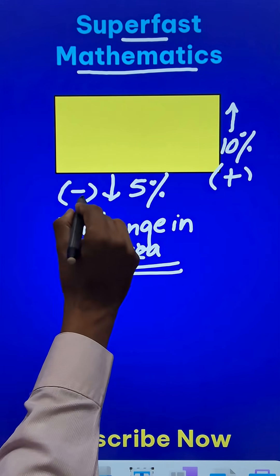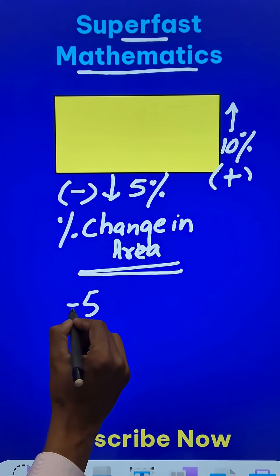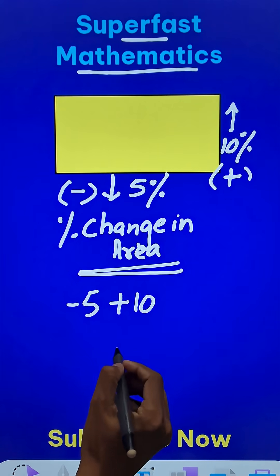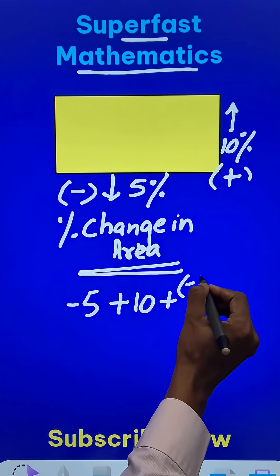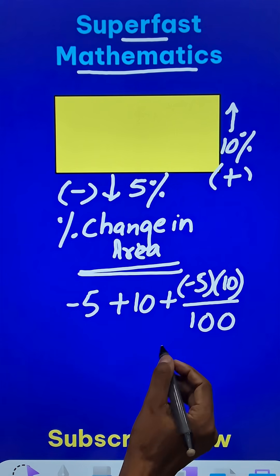So if I take this decrease which is minus 5 and increase by plus 10, so minus 5 plus 10, and then add the product of minus 5 and 10 and divide it by 100, you will get the net percentage change in the area of this rectangle.